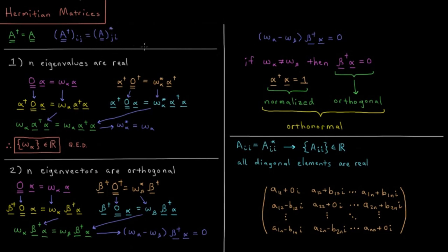Anywhere where I have a matrix diagonal, I flip which side of the diagonal my elements are on and then take the complex conjugate of all of my elements. Two properties that we're going to show in this video for Hermitian matrices: number one, all of the eigenvalues are real, and number two, all of the eigenvectors are orthogonal.